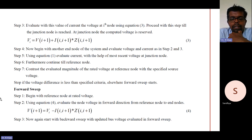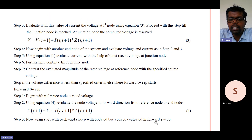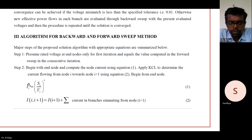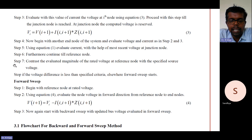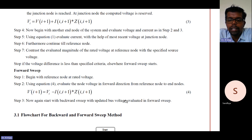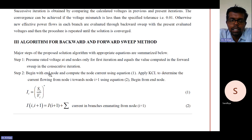In the forward sweep we continue from the first reference node. Now again start the backward sweep with the updated bus voltages evaluated in the forward sweep. With the updated voltages from the forward sweep, start the backward sweep again from step 2 of the backward sweep algorithm, and repeat through step 7.